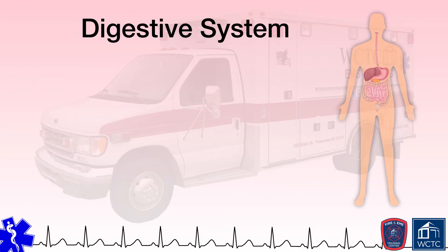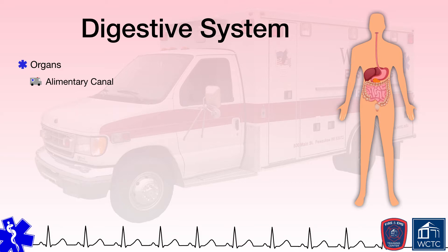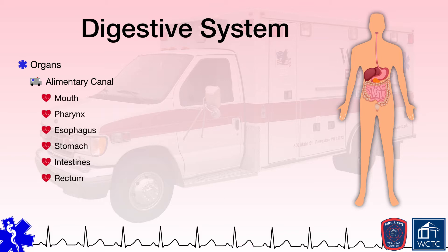Simply stated, the digestive system processes the food we eat and the beverages we drink to provide our bodies with energy and nutrition. The system is broken up into two main categories. The first is the alimentary canal, which is essentially a series of muscular tubes designed for moving and processing food within the body. From beginning to end, the alimentary canal includes a mouth, pharynx, esophagus, stomach, intestines, rectum, and anus. The second main category are accessory digestive organs, which include the teeth, tongue, salivary glands, liver, gallbladder, and pancreas.